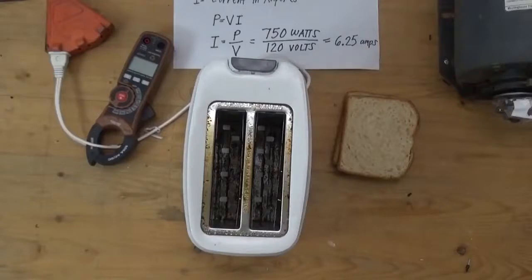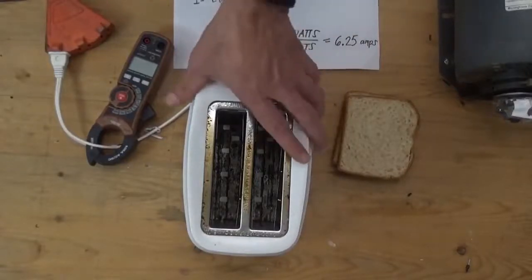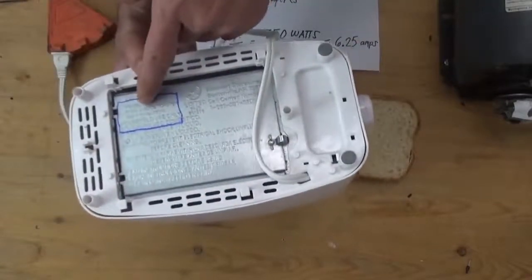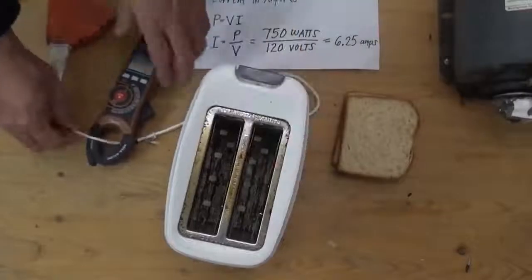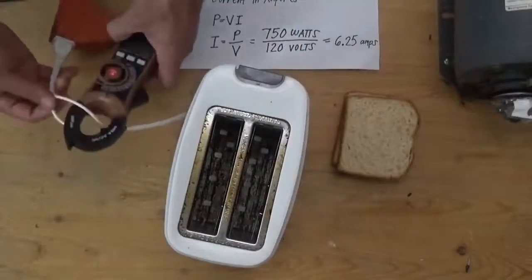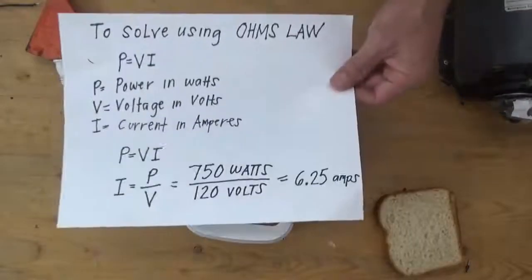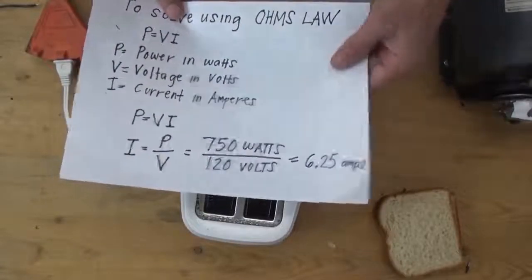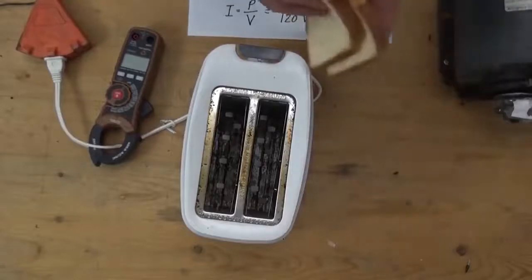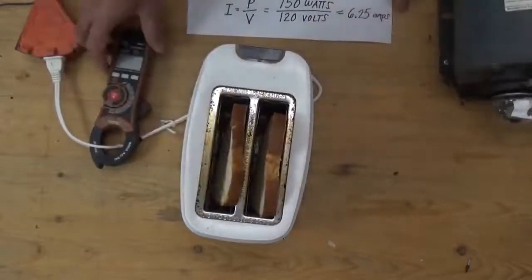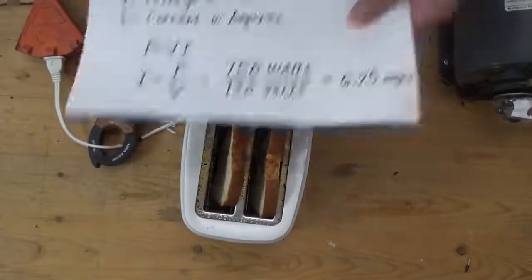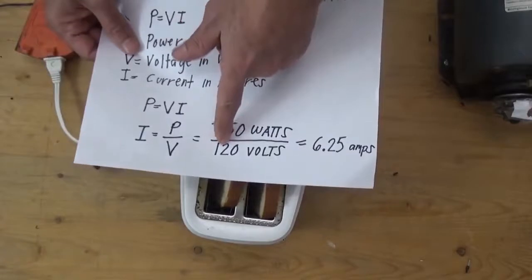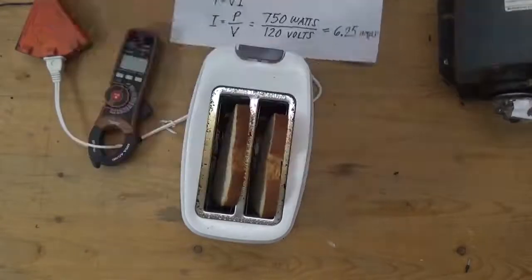Welcome to the Ohm's Law practical exercise. Here we have a bread toaster with a rating of 750 watts and 120 volts, and I have a clamp ammeter connected in series. We are going to prove through our computations that the current is 6.25 amps, since we have 750 watts over 120 volts. I also have a bread here that we're going to toast. Let's prove it.